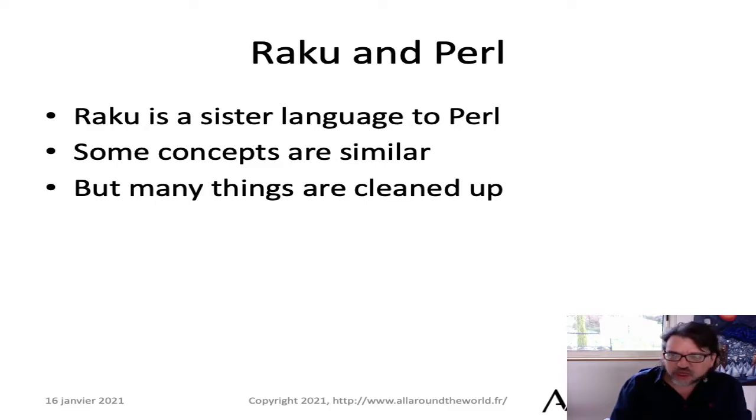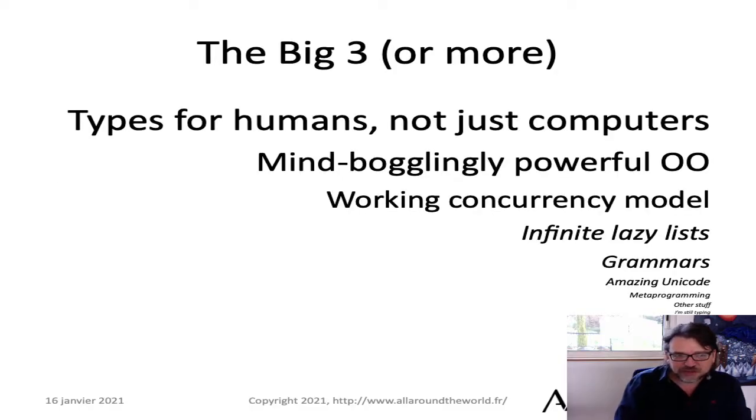I want to focus on some of the really amazing things about the language. The type system is useful for humans, not just computers. That's the one I'm really going to be paying attention to. The OO system for Raku is very powerful, and I absolutely adore it. It's got a working concurrency model, which for dynamic languages pretty much doesn't exist. It's got infinite lazy lists, grammars, wonderful unicode support, metaprogramming, so many things in there. And I'm not even going to go into all of them. I only have so much time for this talk, so I'm just going to cover some of the highlights.